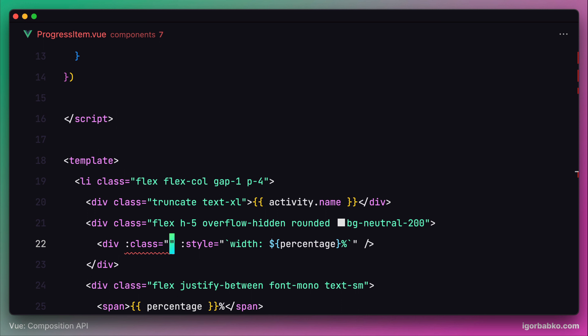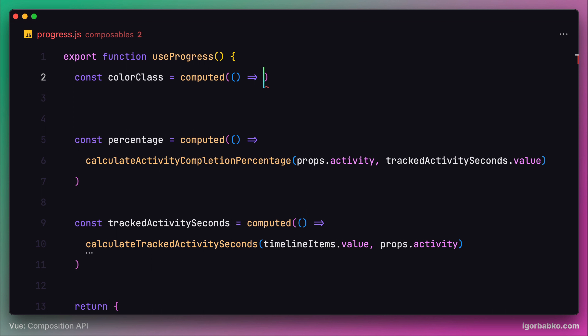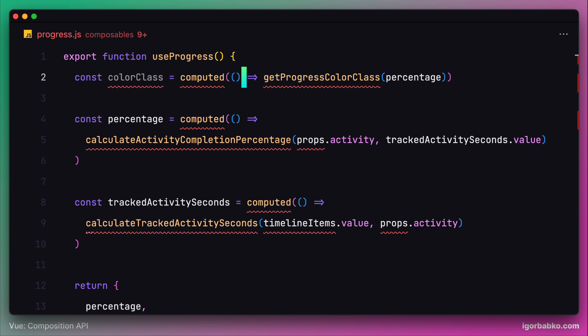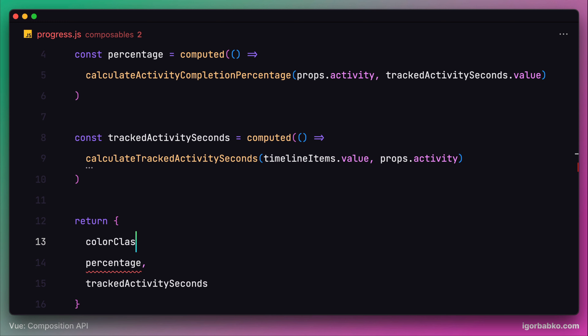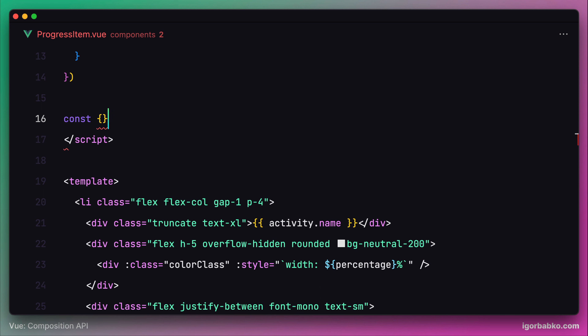For that, we're going to create one more computed property which we'll call colorClass, and declare it inside our new composable. This computed property is going to determine the class assigned to the progress scale based on the changing value of the percentage computed property. Since percentage is updated every second when the stopwatch is running, the colorClass computed property will be re-evaluated every second as well. We also have to add colorClass to the object we are returning from this composable. Now it's time to actually use our new composable inside the progressItem component, so let's call the function useProgress.